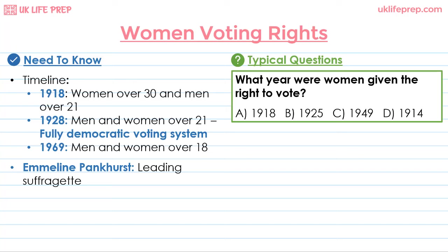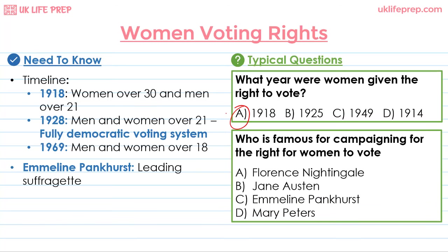Looking at some typical questions. The first question reads: what year were women given the right to vote? We saw that this was 1918. The next question reads: who is famous for campaigning for the right for women to vote? We saw that this was Emmeline Pankhurst.